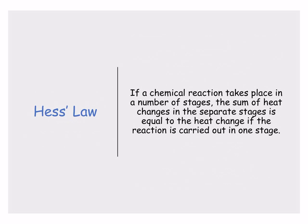If you look at Hess's law: if a chemical reaction takes place in a number of stages, the sum of heat changes in the separate stages is equal to the heat change if the reaction is carried out in one stage. That basically means if you go from A plus B to give C, and it happens in several stages, you would add each heat change together to get the complete heat change.